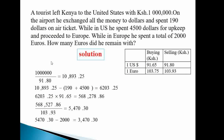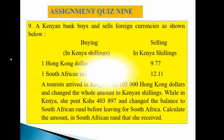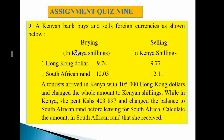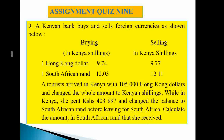Question nine assignment: A Kenyan bank buys 1 Hong Kong dollar at 9.74 KES and sells at 9.77; buys 1 South African rand at 12.03 and sells at 12.11. A traveller arrives with 105,000 Hong Kong dollars, converts to KES, spends 103,000.887 KES, then converts the balance to South African rand. Calculate the amount in South African rand received.